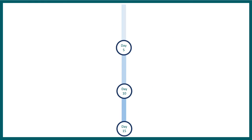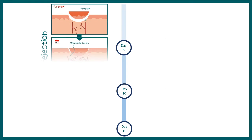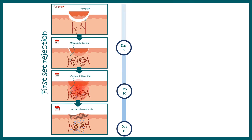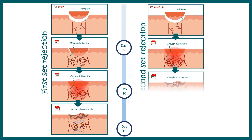There can be two types of graft rejection. The first-set rejection takes about 14 to 15 days. The second-set rejection is quicker, taking only about 10 days — this occurs when a second graft is placed in the same location after the first has already been rejected, showing an accelerated immune response.